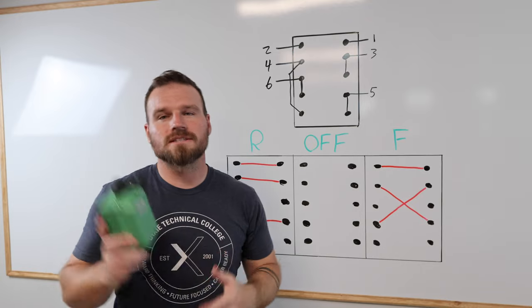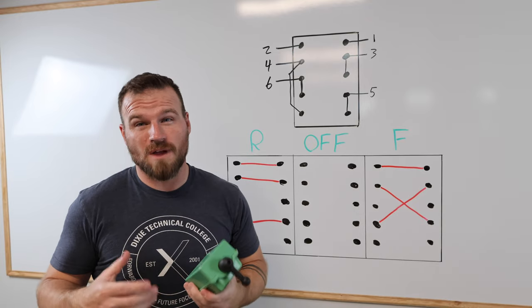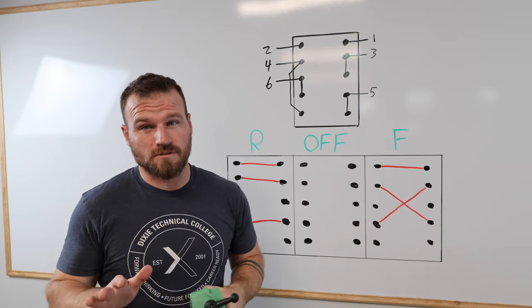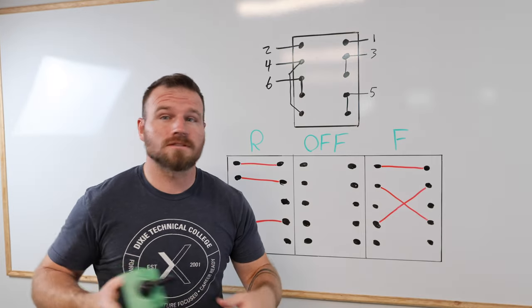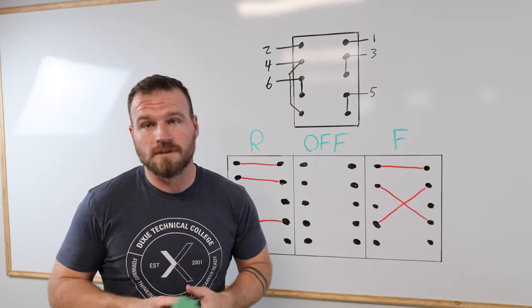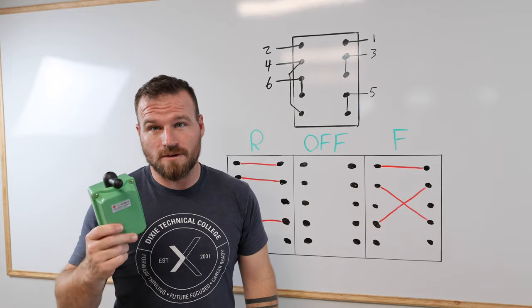So the QS-60 is probably going to be the most popular drum switch that you can find. If you just did a quick Google search, you're going to find 100 of these for sale on multiple different websites, and they are dirt cheap. All I'm going to say is you get what you pay for.